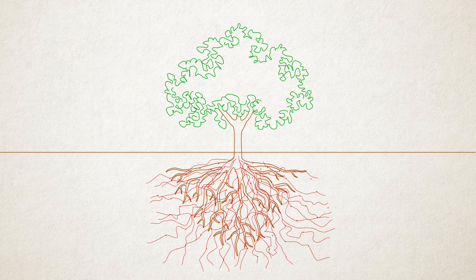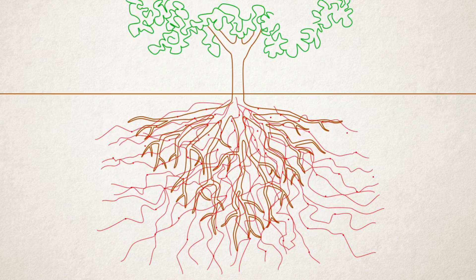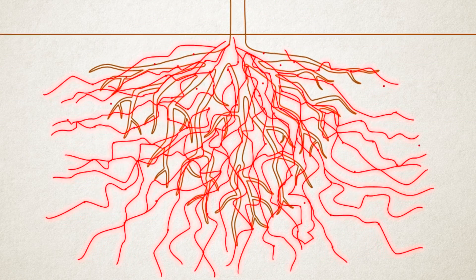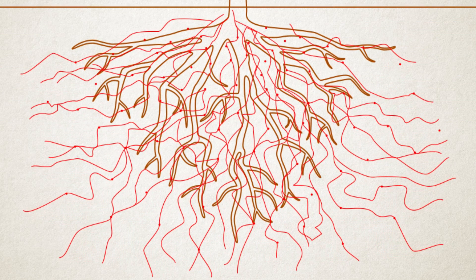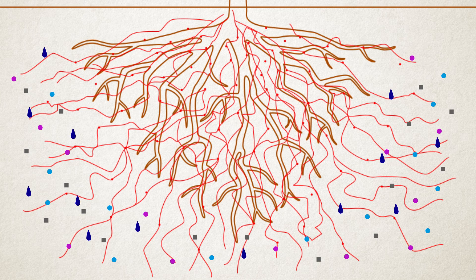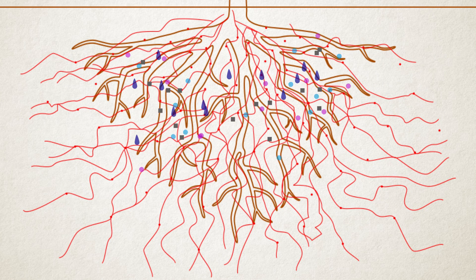So what is this work about? Mycorrhizal fungi establish close physical contact with the roots by forming long hyphae that reach out beyond the area exploited by the roots. That is, fungal filaments act as extensions of the radical plant system. They obtain nutrients, minerals and water and translocate them back to the plant. In return, the fungi obtain carbohydrates from plant root secretions.